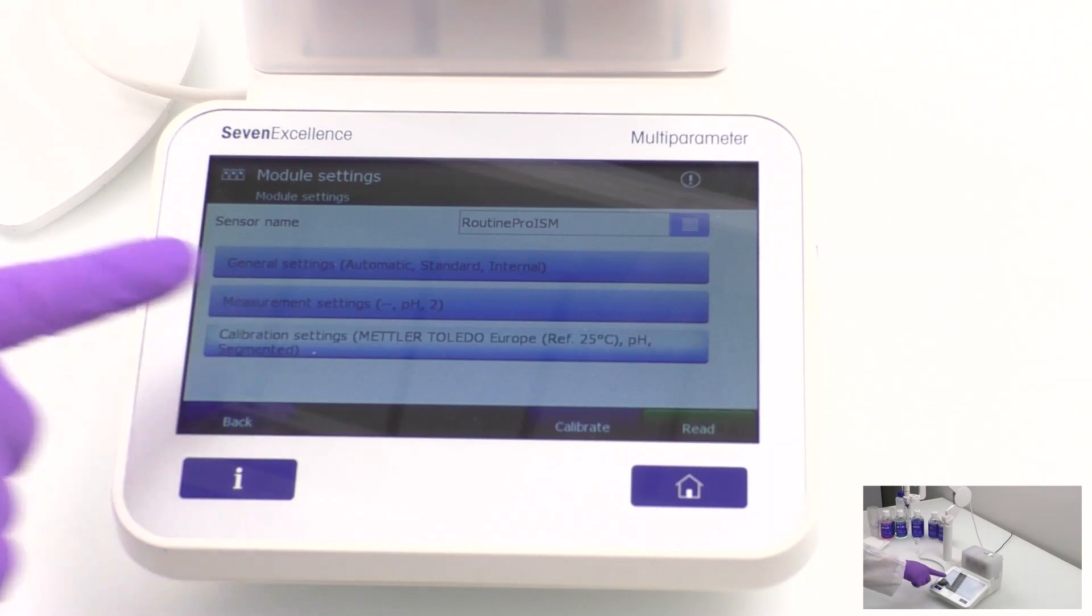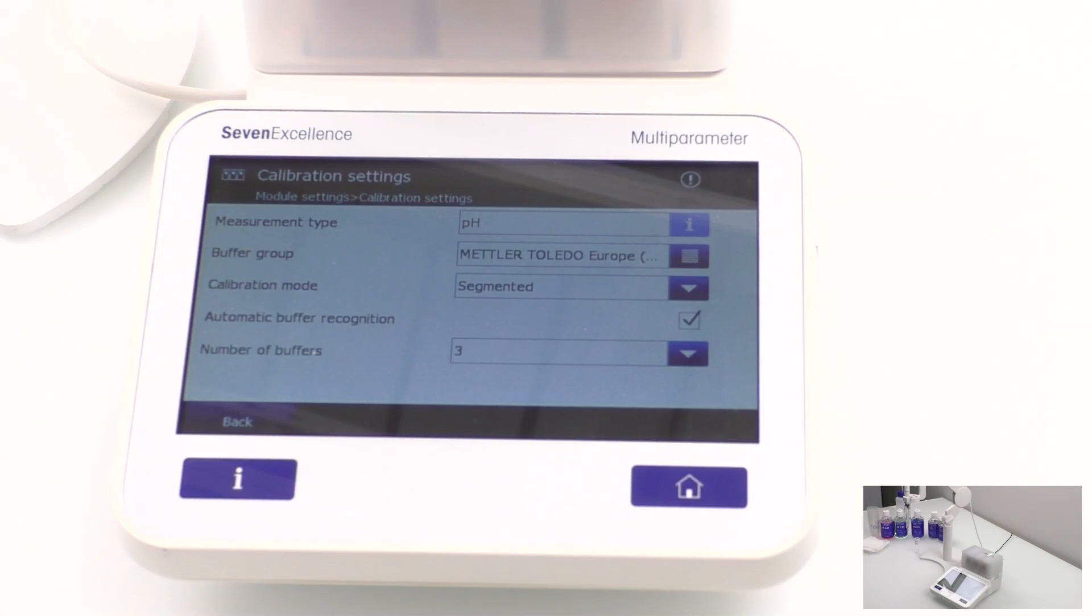For calibration settings, keep the default European buffer group, select the calibration mode Segmented, and select the number of buffers used. Once you've made your selections, select back.